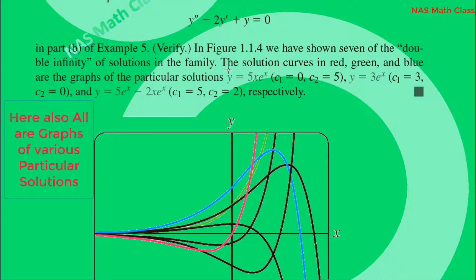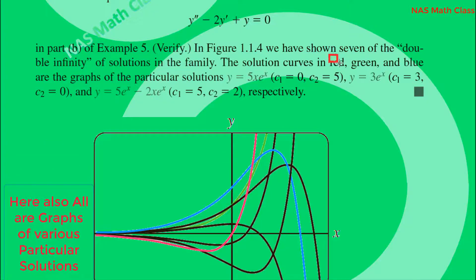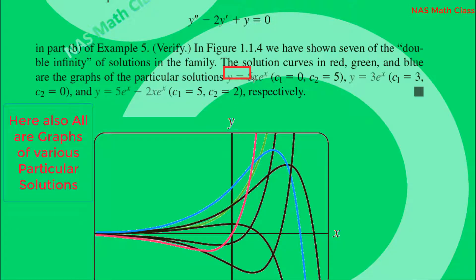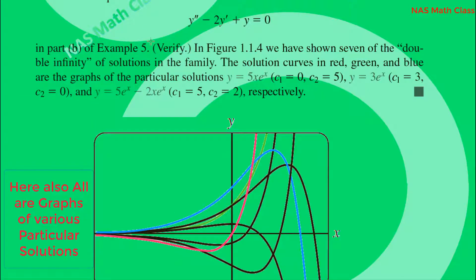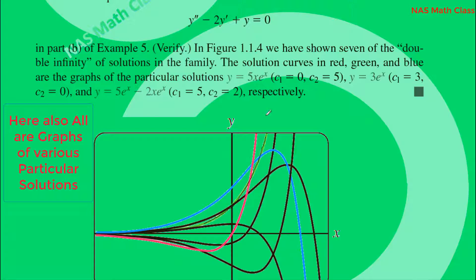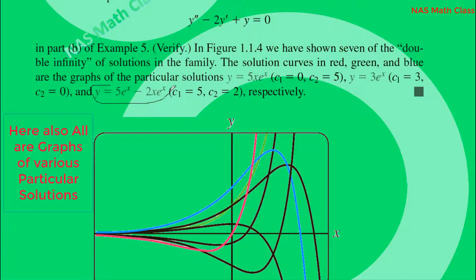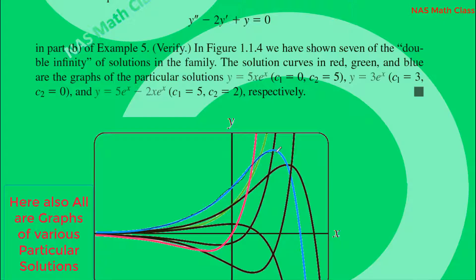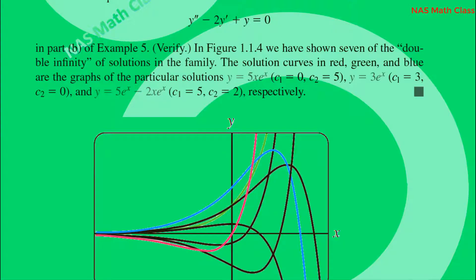Looking at the graph, y = 5x·e^x is shown as the yellow graph, and another particular solution is shown as the green graph. The different colored curves in the figure correspond to different particular solutions from the two-parameter family.